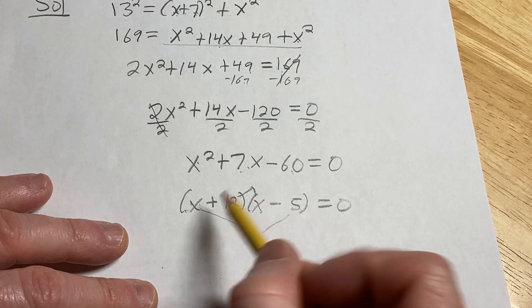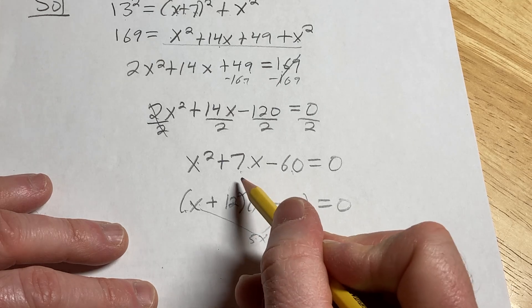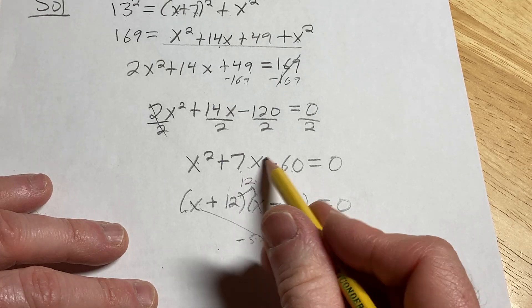12x minus 5x is 7x. The middle, the inner and the outer, the inner and the outer should add to this here. So 12x plus negative 5x is 7x.